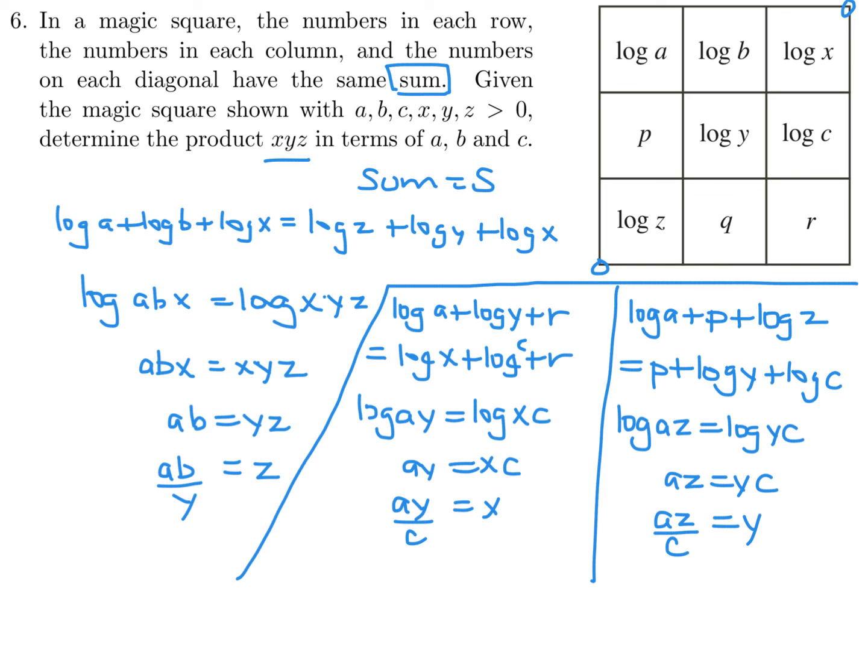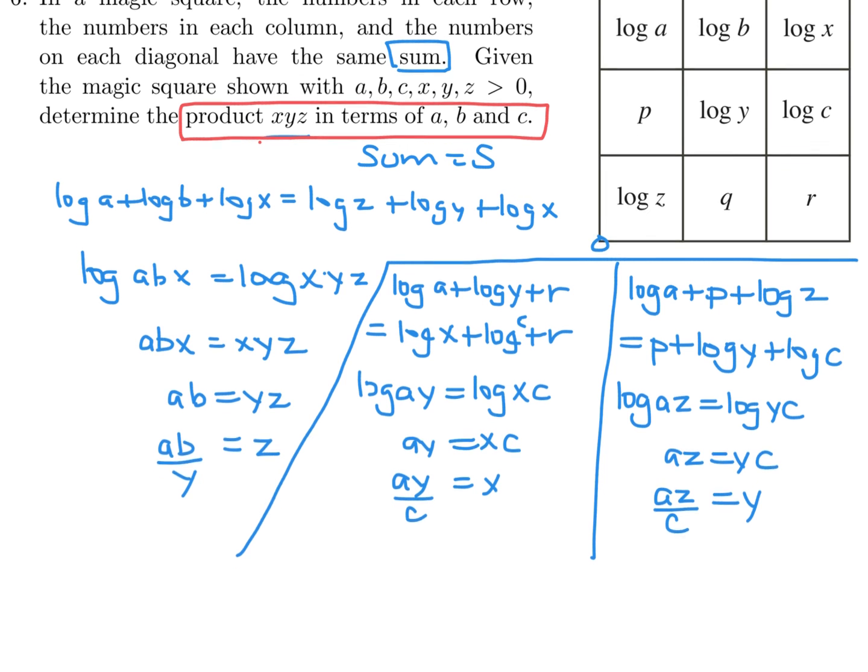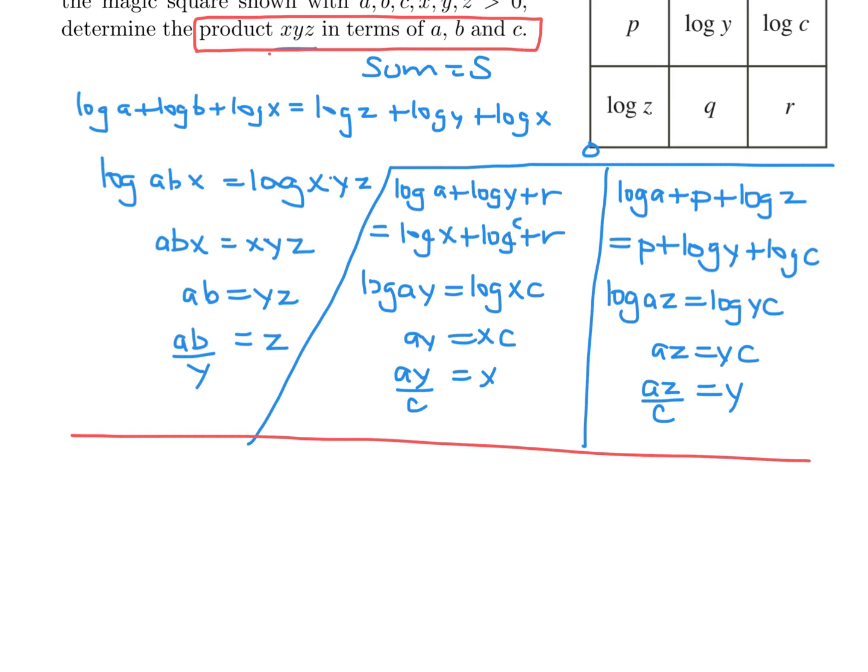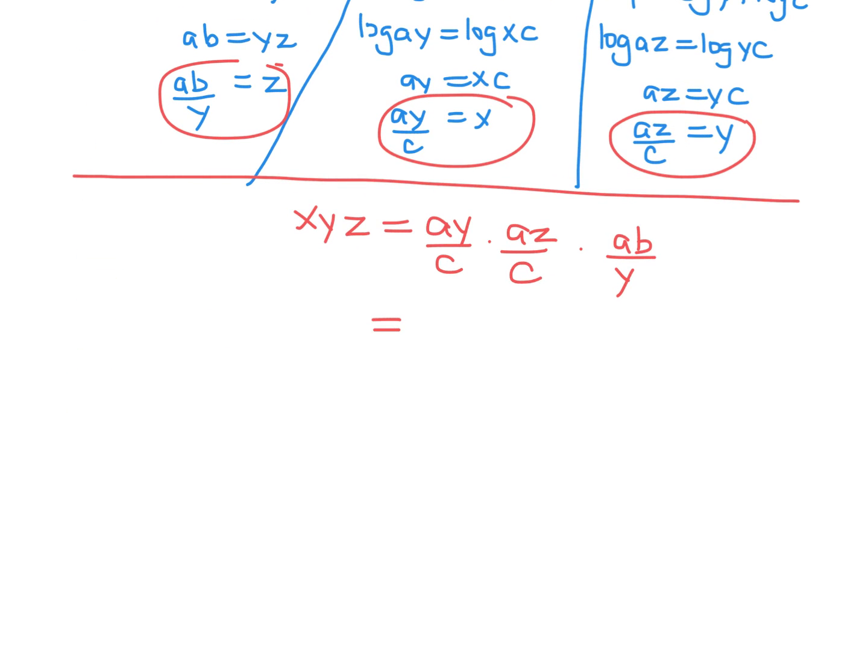So now I guess we can combine it. We want X, Y, Z in terms of A, B, C. So, let's see what we get. X, Y, Z. So, X is A, Y over C. Y is A, Z over C. And Z is A, B over Y. Let's see what happens. Combining this, we get A to the power of 3. The Y's cancel, interestingly. We just have this B and then we have this Z and then we have C squared. Well, that's pretty good, but we still have that Z in there. So I guess, hmm, what do I do now? I still got a Z in there.